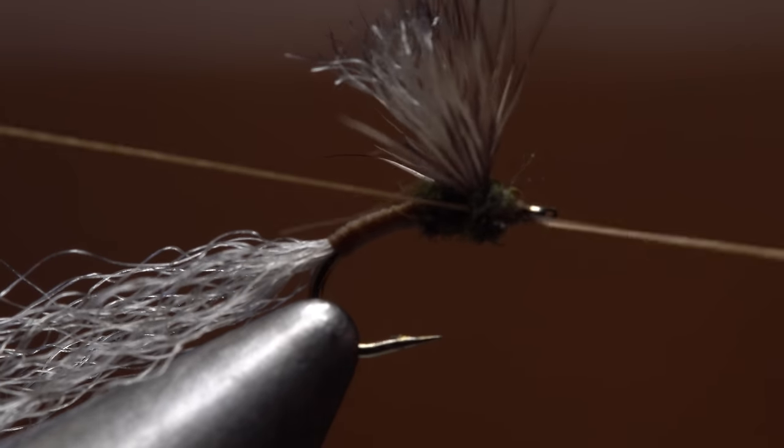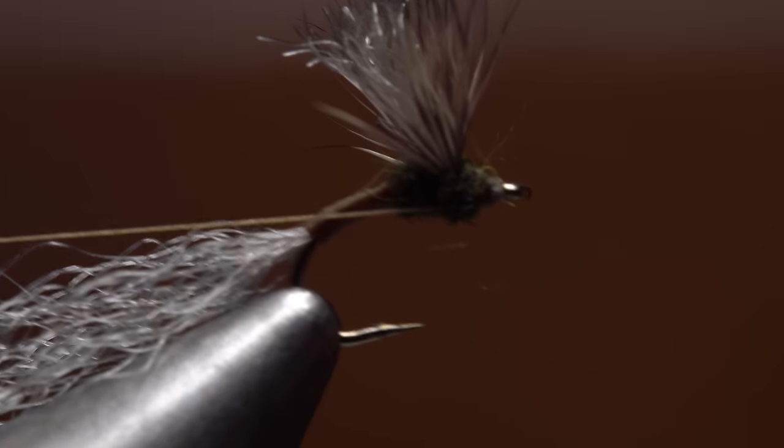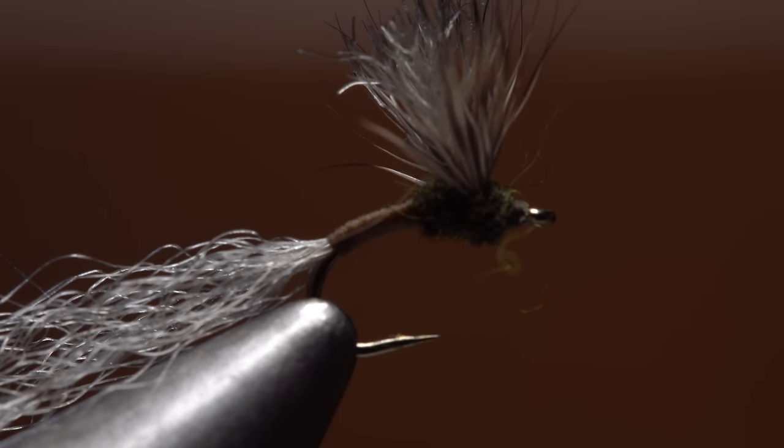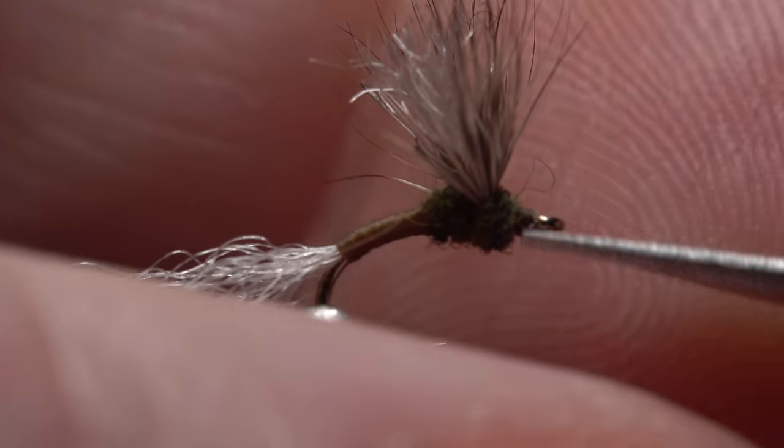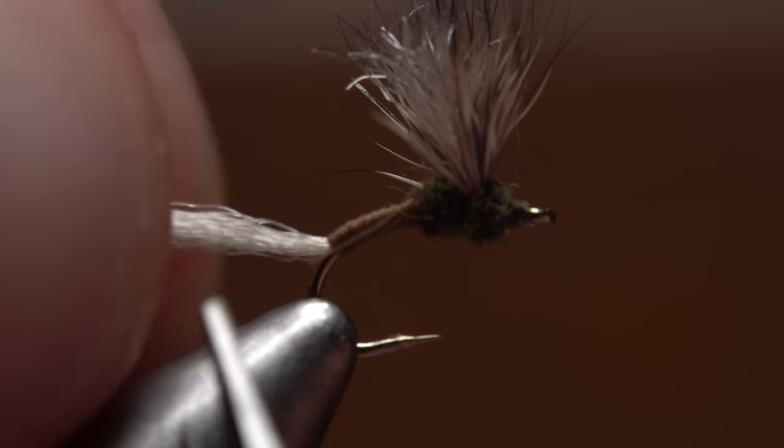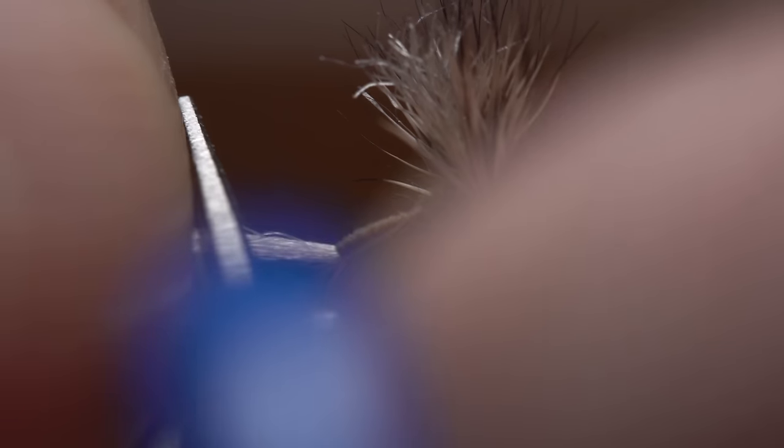There, do a four or five turn whip finish and snip or cut your tying thread free. All that's left to do now is a little clean up and to snip the Zeelon tail off to approximately a hook gap in length.